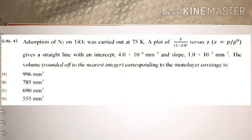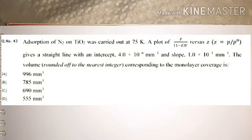This is your first question, asked in GATE 2020. The question says: adsorption of nitrogen on TiO₂ (titanium oxide) was carried out at 75 Kelvin. A plot of z/(1−z) versus z, where z = p/p₀, gives a straight line with an intercept of 4×10⁶ nm³ and slope of 1×10³ mm³. The volume corresponding to monolayer coverage, rounded to the nearest integer, is — and you have four options.